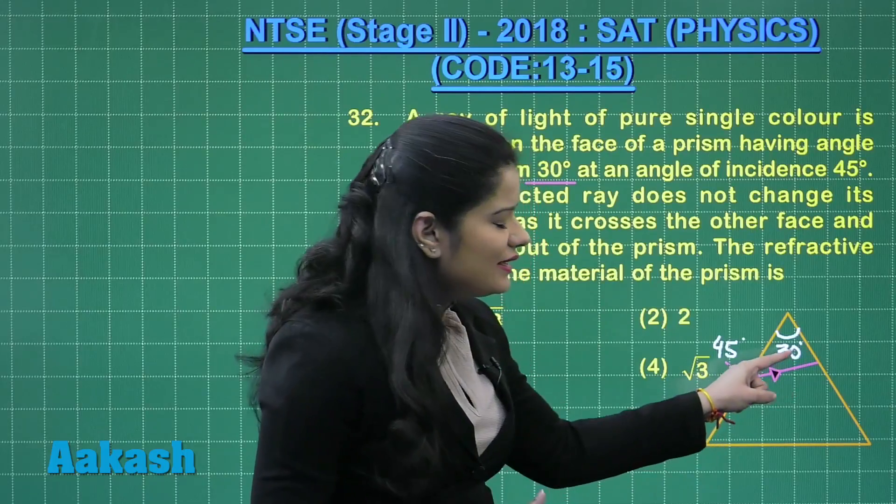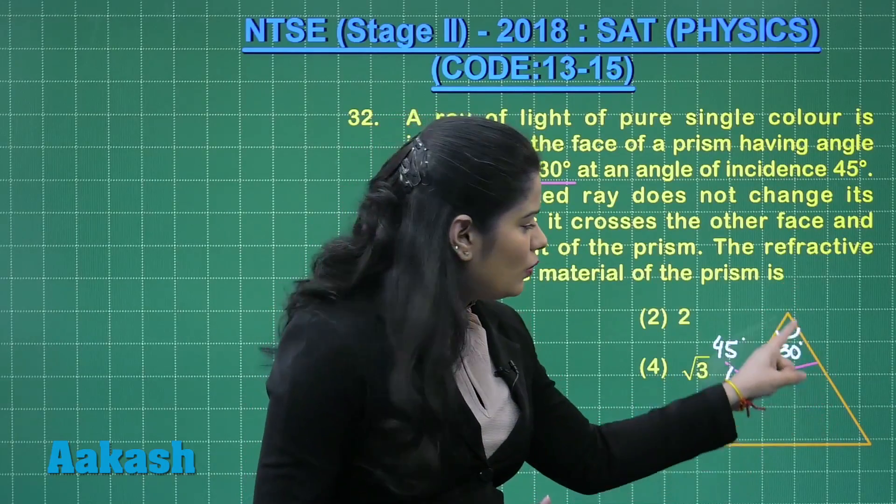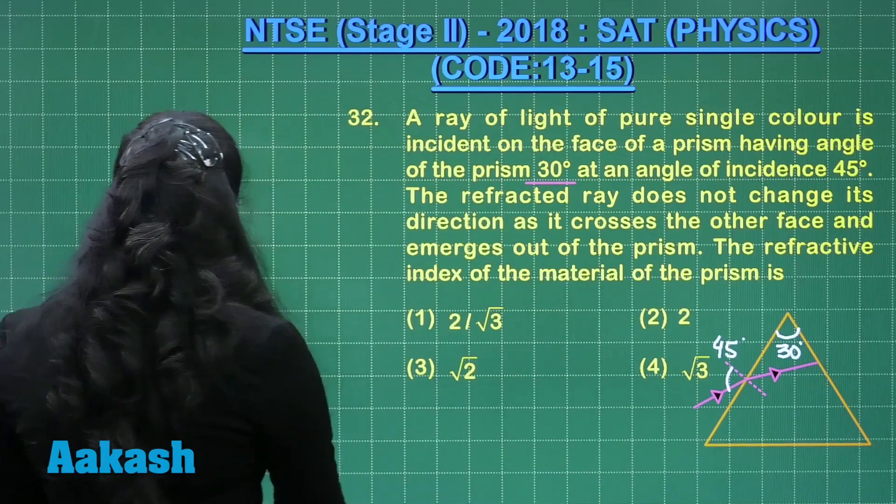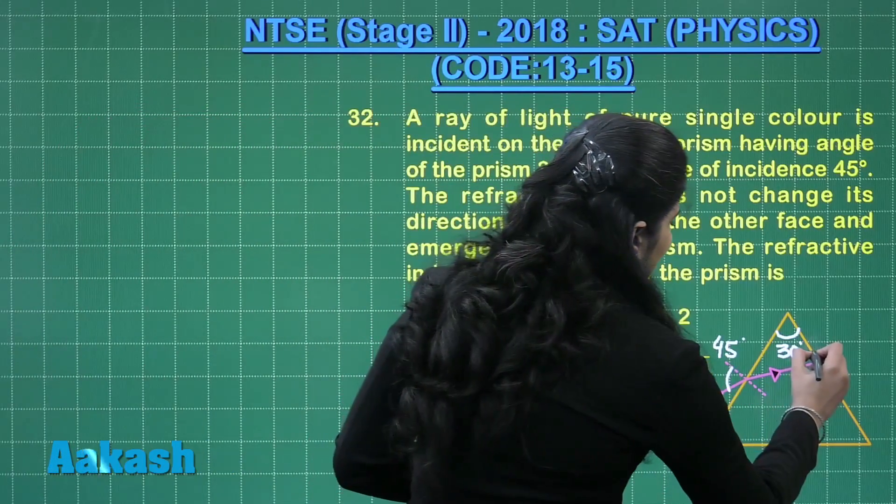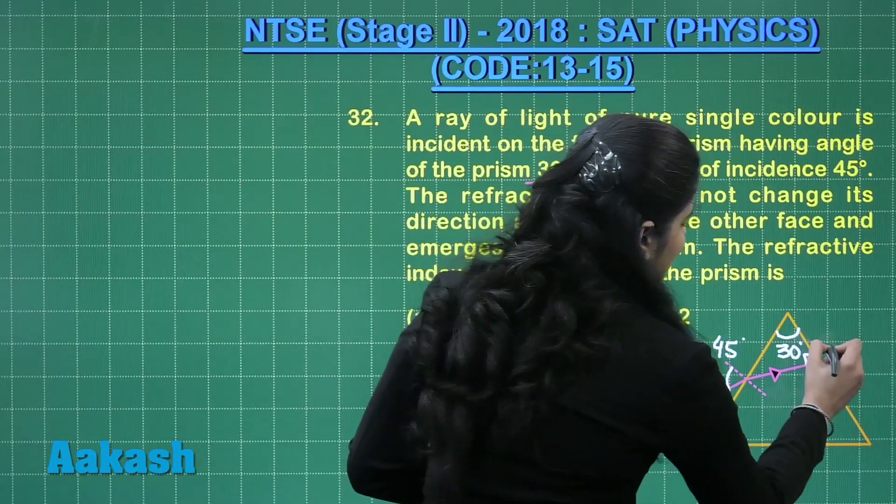It means here this refracted ray falls normal on this second face of the prism, which means this angle here is 90 degrees.